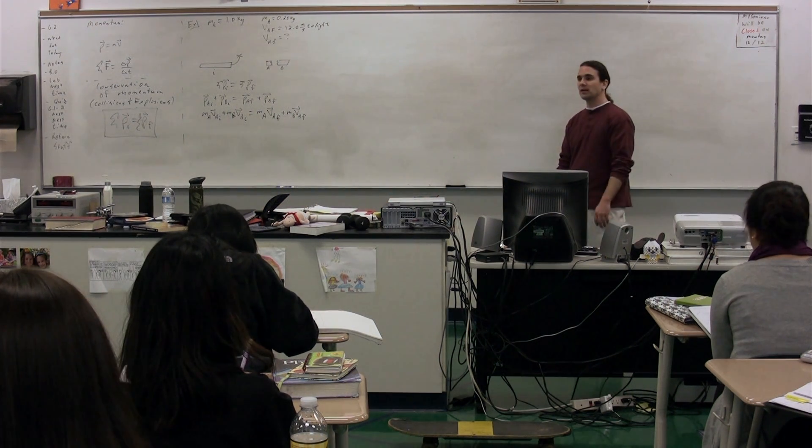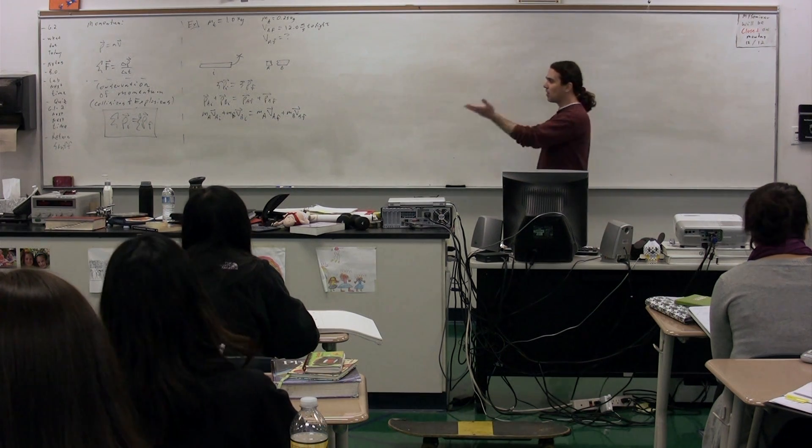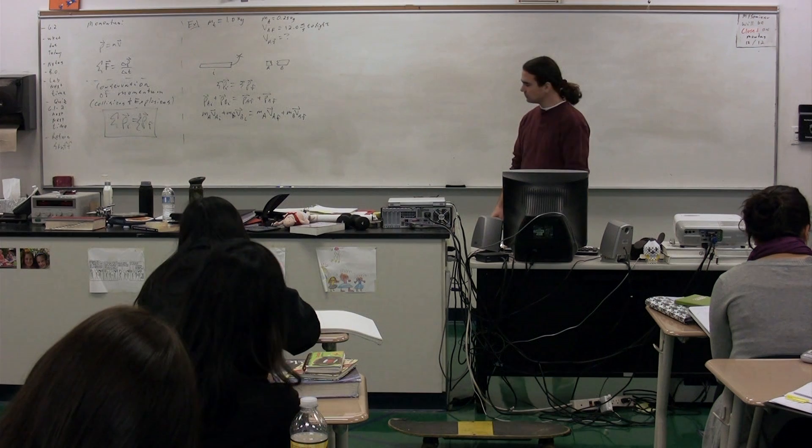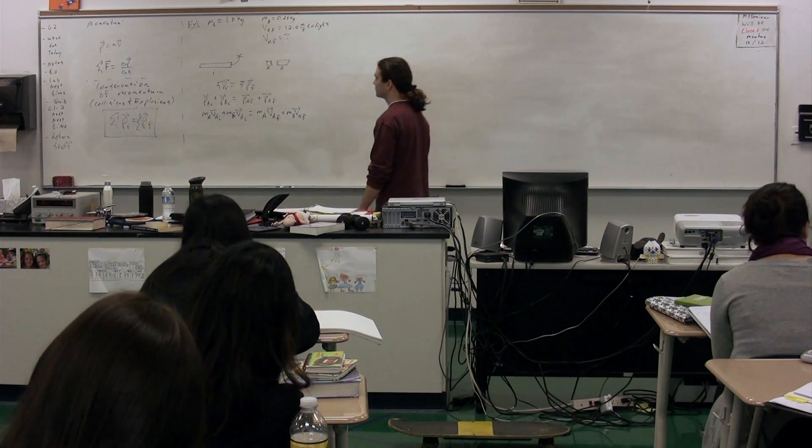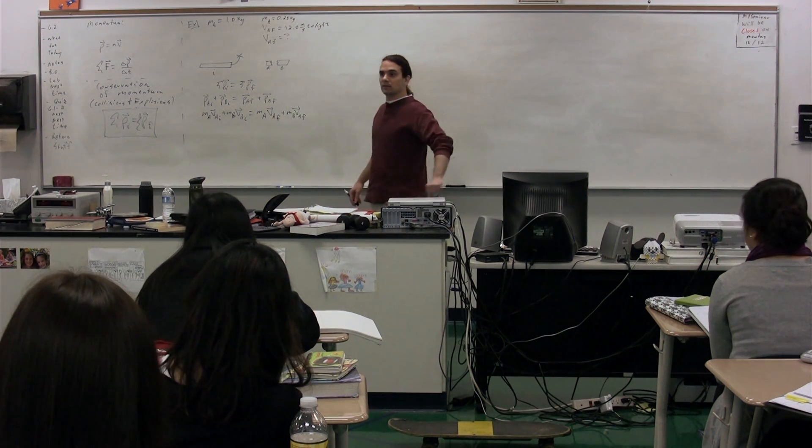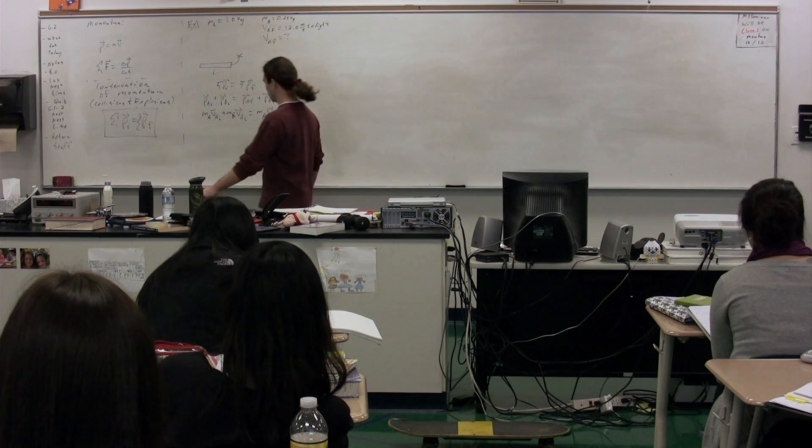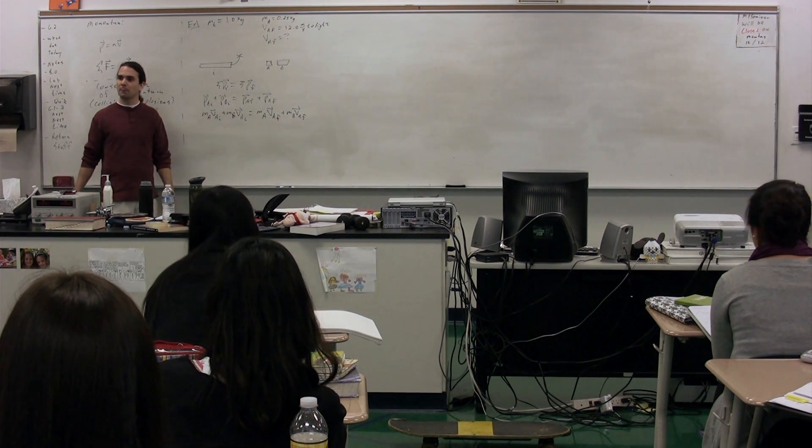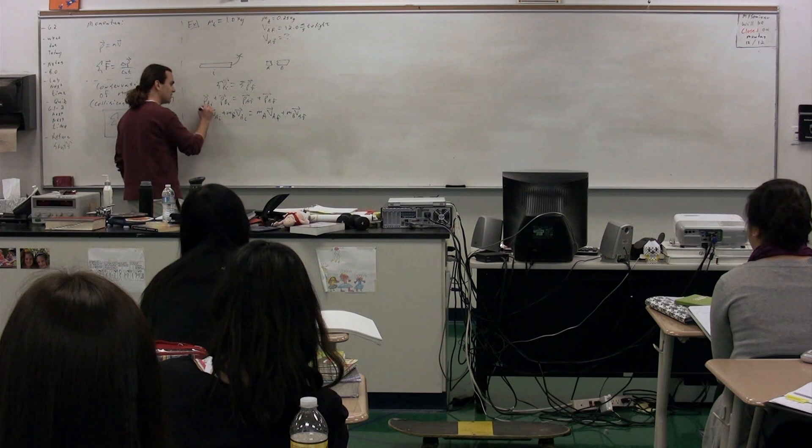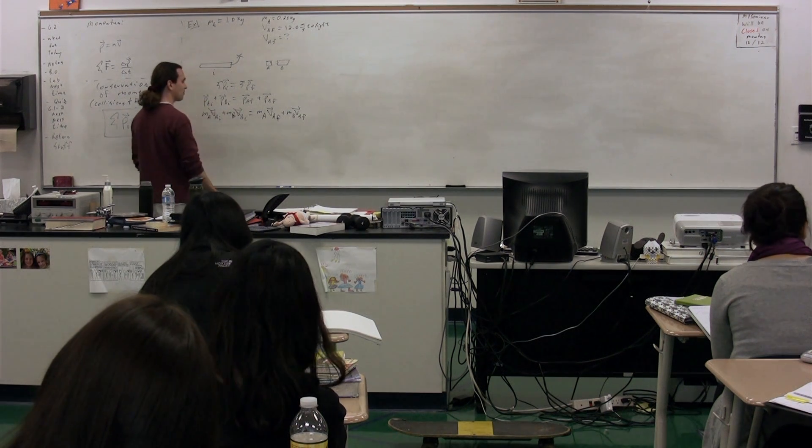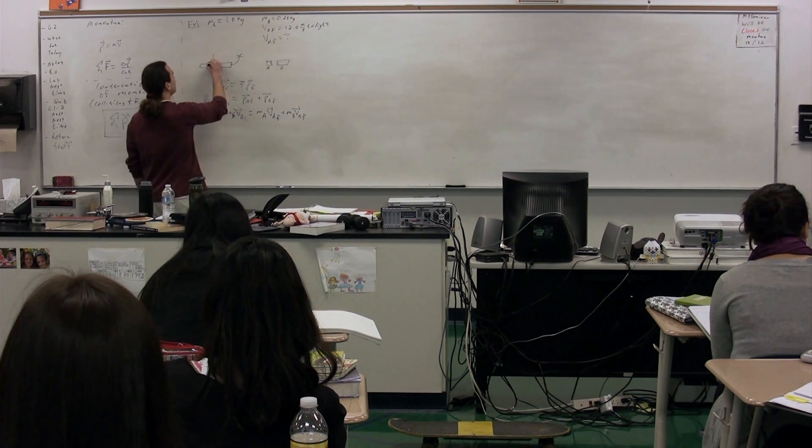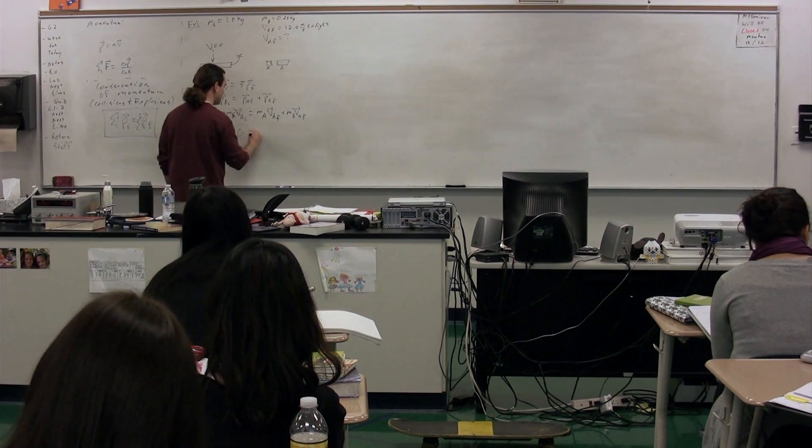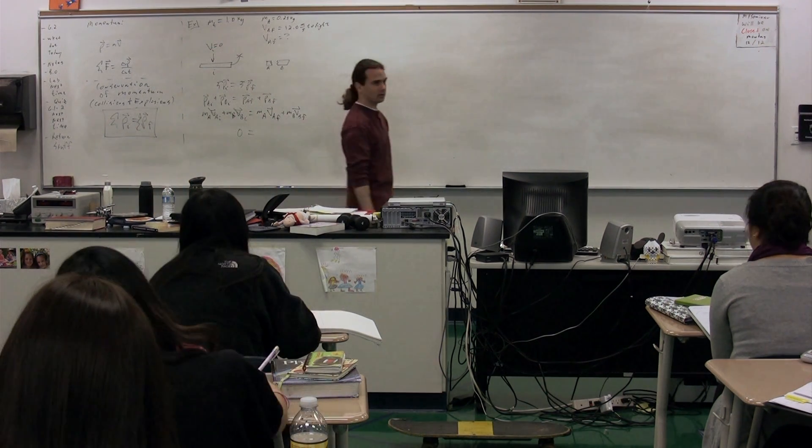Working from left to right, tell me something we know about this equation. Your initial velocity is zero. Of what? More specifically? Of both pieces. The velocity of A initial and velocity of B initial are both equal to zero. This whole thing has an initial velocity of zero, so the whole left-hand side works out to be zero.